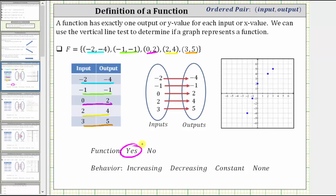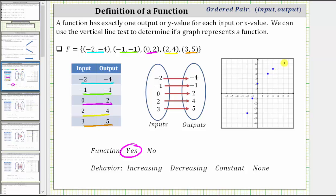Another way to determine whether we have a function is to graph the points on the coordinate plane. To determine whether a graph represents a function, we pass a vertical line across the graph. If a vertical line ever intersects the graph in more than one point, we do not have a function. Here, a vertical line has either one or zero points of intersection, so it passes the vertical line test and we have a function. Notice the graph goes uphill from left to right, which means the function is increasing — as the inputs increase, the outputs also increase.